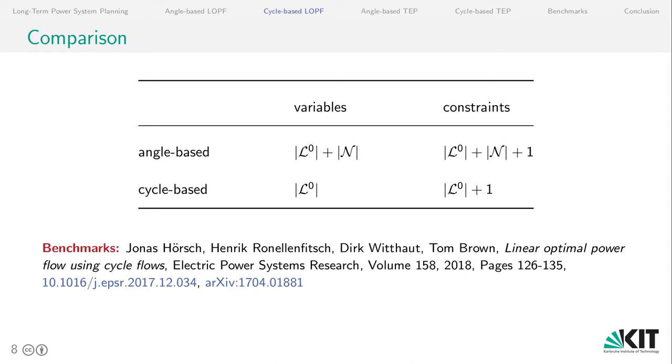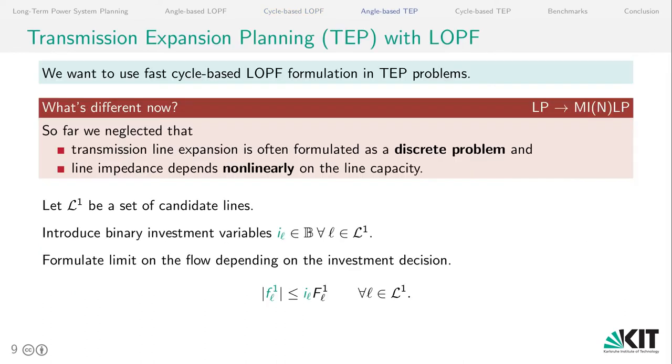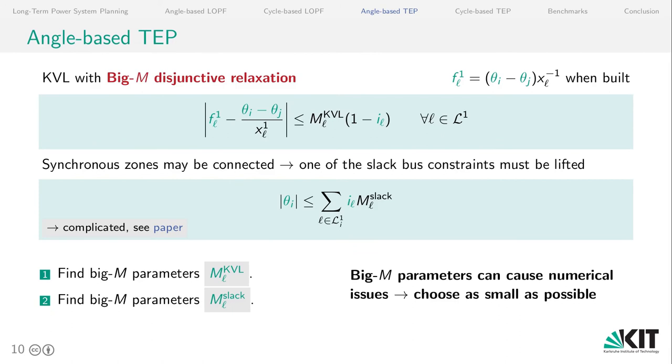So let's in the next step expand this cycle-based formulation to transmission expansion planning. What's different now is that, well, so far we have neglected that the transmission line expansion is often formulated as a discrete problem. And also that the line impedance depends nonlinearly on the line capacity. And this makes our problem a mixed integer nonlinear problem, which we can turn into a mixed integer linear problem by using a big M formulation. So we now have binary investment variables for each of the candidate lines L1. And we formulate the limit on the flow depending on the investment decisions.